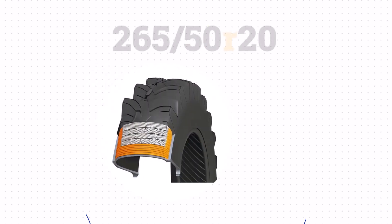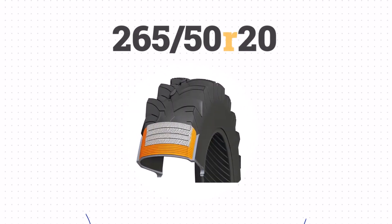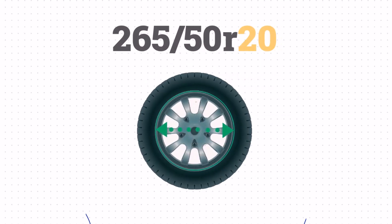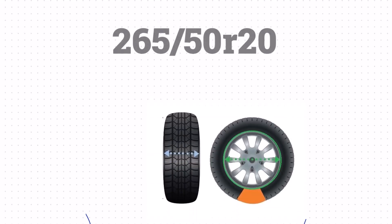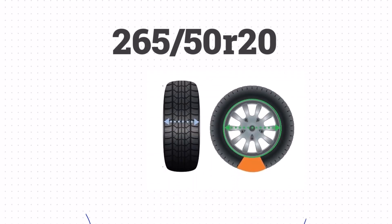The R just means radial construction as opposed to bias ply. And the final number, 20, that's the wheel size. Now that we've got the width, sidewall size, and wheel size, we can take all that together and get the height of the tire.